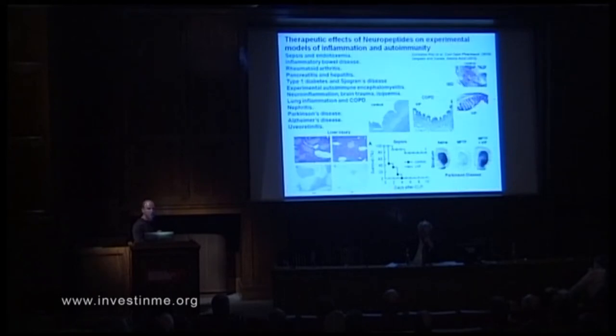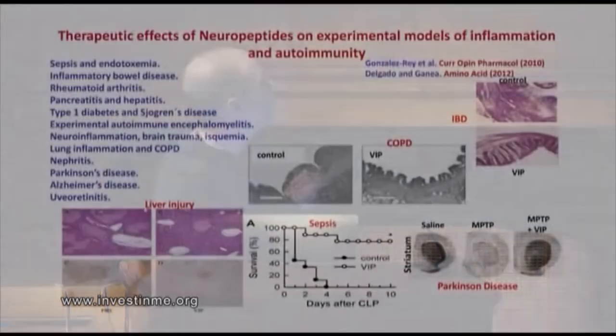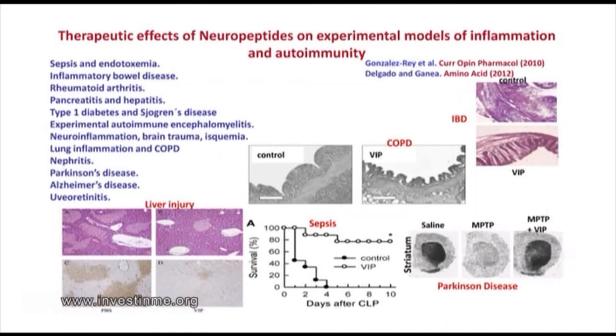With this scenario, you can imagine that many groups have tried to use these neuropeptides in different autoimmune and inflammatory diseases. We have used them previously in animal models. This is the list of animal models in which these neuropeptides — mainly VIP — have been shown to be effective: sepsis, inflammatory bowel disease, rheumatoid arthritis, neuroinflammatory diseases, Parkinson's disease, Alzheimer's, spinal cord trauma, and others.